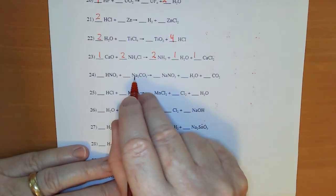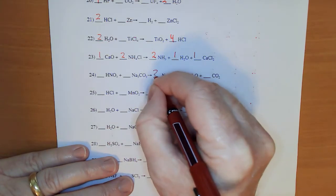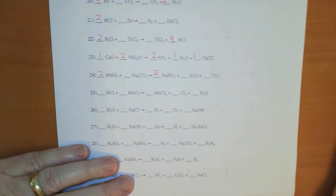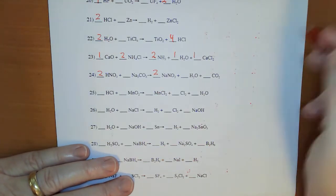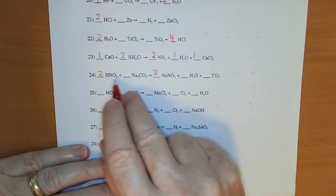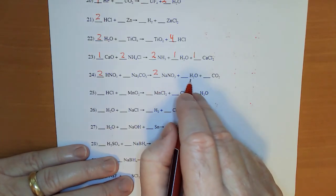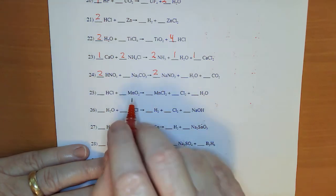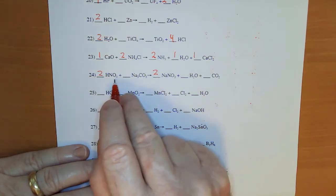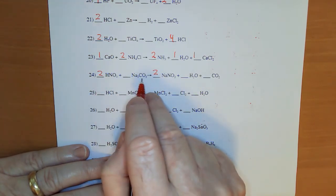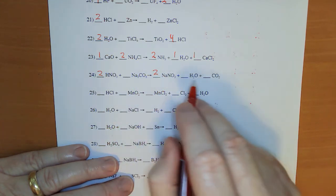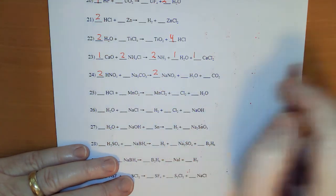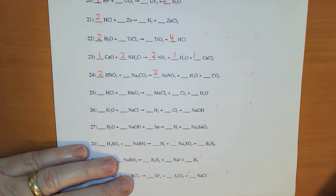I see 2 sodiums but there's only 1, so I put a 2. That's 2 nitrate, so I put a 2 there. On my waters: 2 hydrogen and 2 — that balances out. Oxygen's getting a little tricky: 2 times 3 is 6, plus 3 is 9. 2 times 3 is 6, plus 1 is 7, plus 2 is 8 and 9. We're balanced.